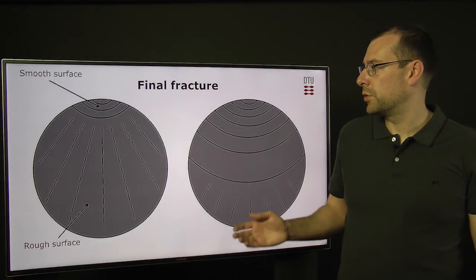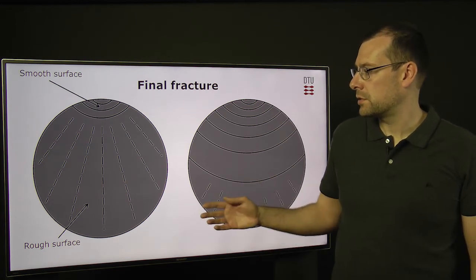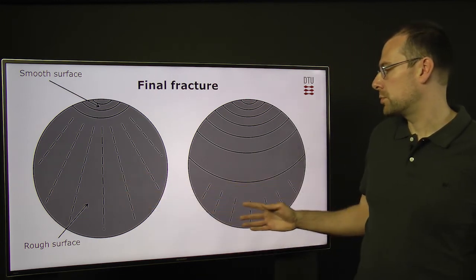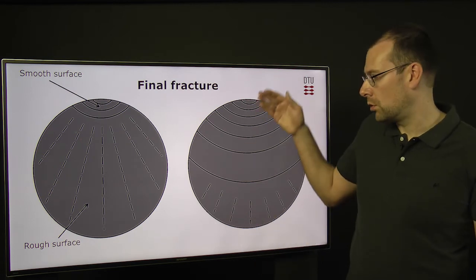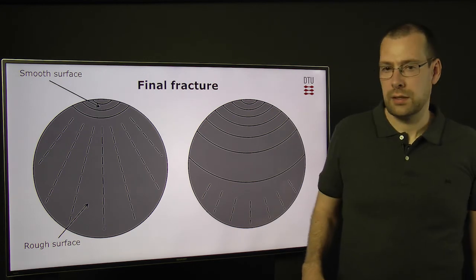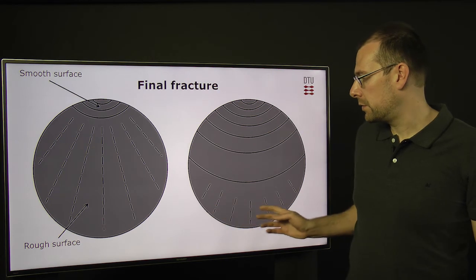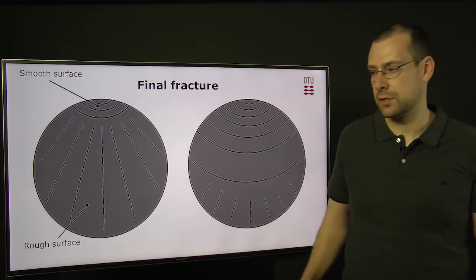Eventually, the component will fail, but we will have a final fracture surface. This may be quite large or it can also be small. So the fatigue crack can sometimes grow almost all the way through the component before it fails. So this final fracture surface is usually quite rough compared to the surface of the fatigue crack, which is quite smooth.